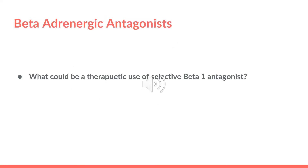Now I have a question for you. What could be a therapeutic use of selective beta-1 antagonists? They are useful in tachycardia, as antihypertensives, and in angina because they decrease the O2 demand, which would decrease heart rate and heart force.